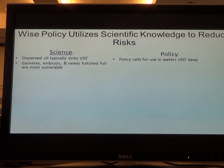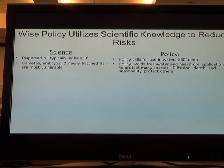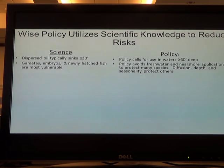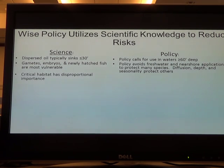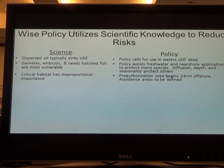Science tells us certain life stages are more sensitive, so we try to reduce that threat by only pre-authorizing dispersant use 24 miles or more offshore. That's going to exclude a lot of your nearshore spawning organisms and anadromous species like salmon. Once you get offshore, there are pelagic spawning species, but in general they're going to diffuse and disperse themselves and won't be as concentrated as in critical habitat. Critical habitat has a disproportionate impact, so we're beginning the pre-authorization at 24 miles offshore and are actively seeking information about what areas to avoid.